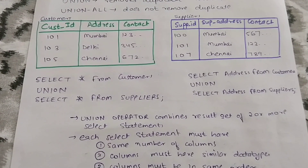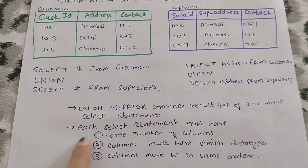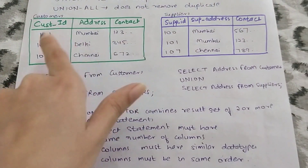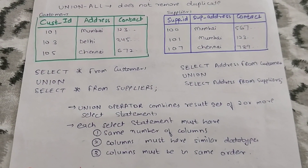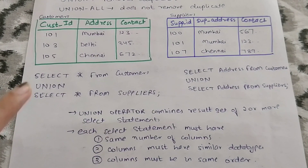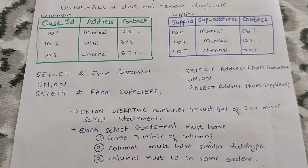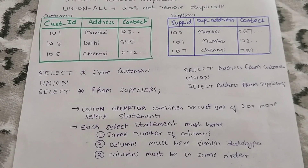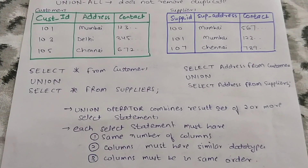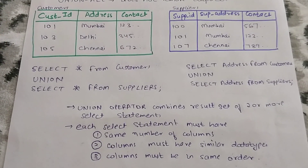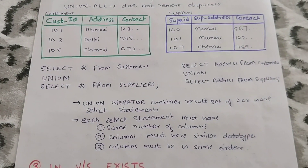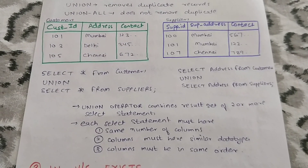There are a few conditions you should remember for UNION. First, each SELECT statement must have the same number of columns. Second, columns must have similar data types — for example, customer ID and supplier ID should both be INT, and address fields should both be VARCHAR. Third, columns must be in the same order. These conditions must be fulfilled for UNION to work.